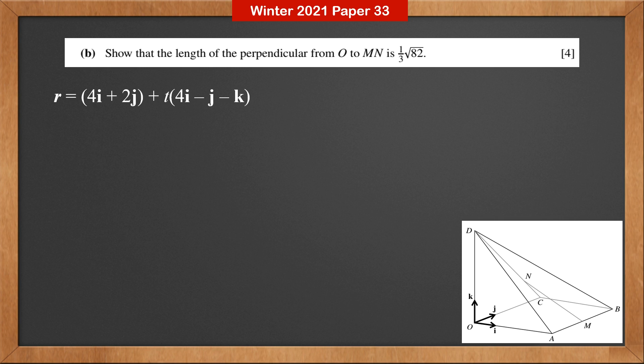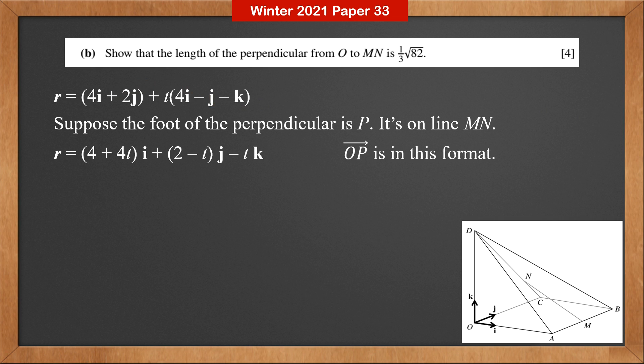From part A, we know that the equation of the line is 4I plus 2J plus T times 4I minus J minus K. Suppose that the foot of the perpendicular is P. And we know that P is on line MN. Therefore, it should satisfy the line equation. We rewrite the line equation as 4 plus 4T times I plus 2 minus T times J minus T times K. OP should be in this format. And since OP is perpendicular to MN,